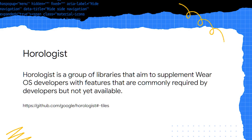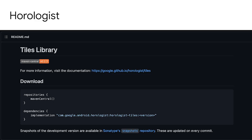To build tiles we use the Horologist APIs — a group of libraries that supplement Wear OS development. If you know what Accompanist is for Jetpack Compose, Horologist is the Wear OS equivalent. This is what you need to import in your build.gradle file to use the tiles library.